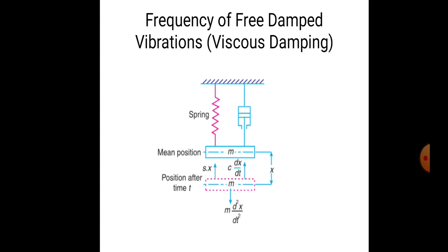Now what forces are acting on the system? There is a spring force s times x, then the force due to the damper, that is c times dx/dt, which equals c times x-dot. Then stiffness s times x. These forces are exactly opposite to the inertia force, which is m times d²x/dt². These are the forces acting on the spring-mass-damper system.